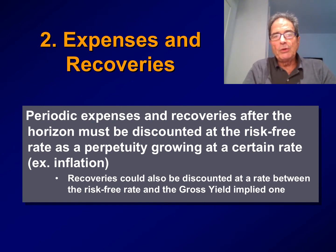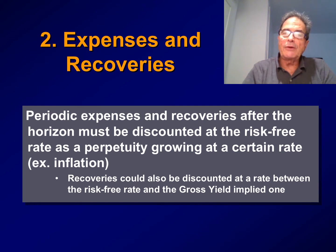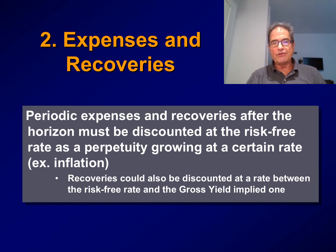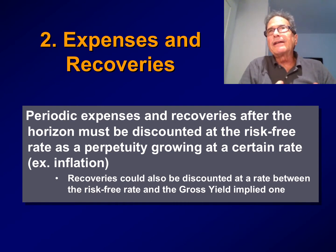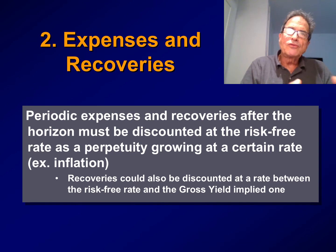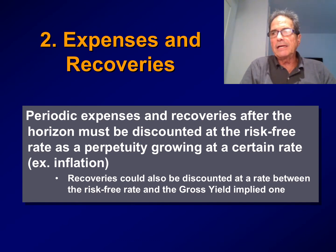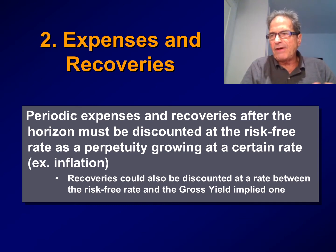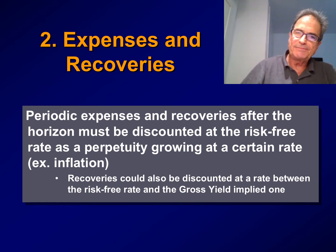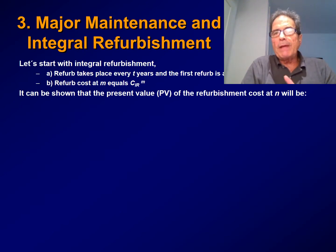The second component of the perpetuity is expenses and recoveries. Expenses and recoveries after the horizon must be discounted at the risk-free rate as a perpetuity growing at a certain rate, usually the inflation rate. We include recoveries in this component and discount them at the risk-free rate as well. However, in rigor, recoveries are correlated with gross potential income, so the cash flow corresponding to recoveries should be discounted at a rate somewhere between the risk-free rate and the rate implied in the gross yield. Given that recoveries are usually not that significant, we simplify by adding this item to periodic expenses.